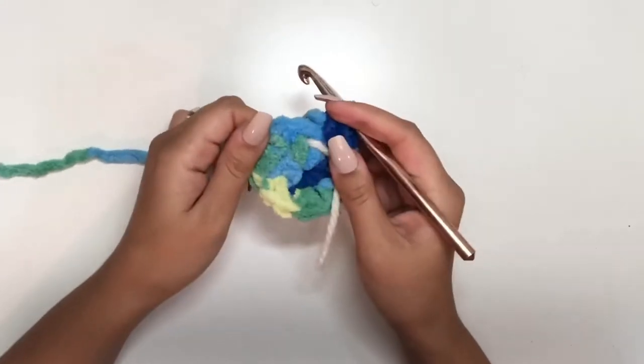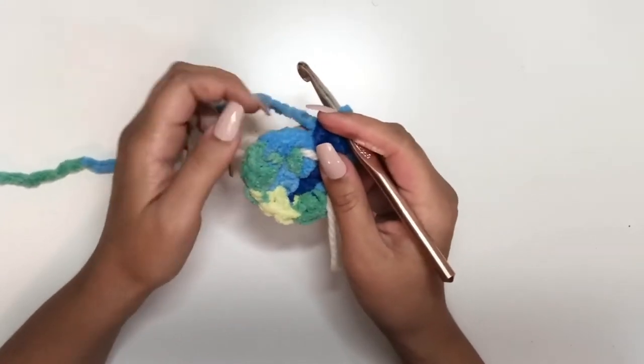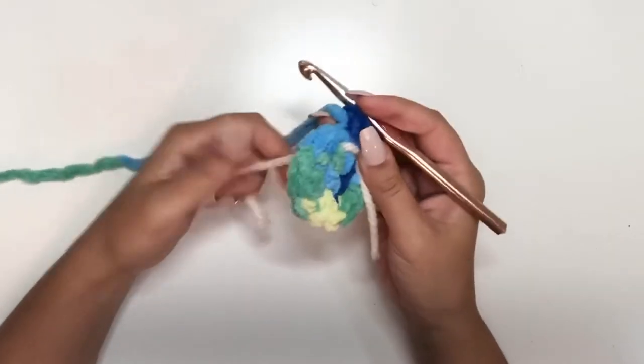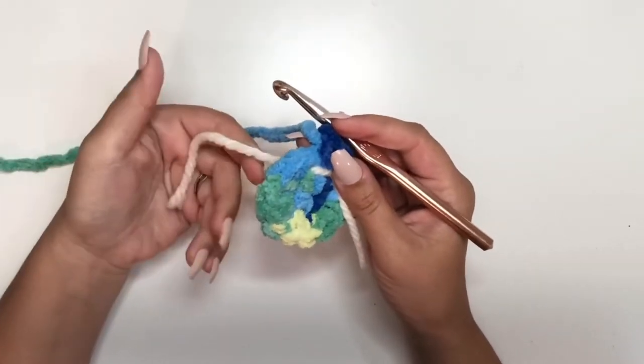Now we'll move on to the third row. For the third row you're going to do one single crochet into each stitch around.